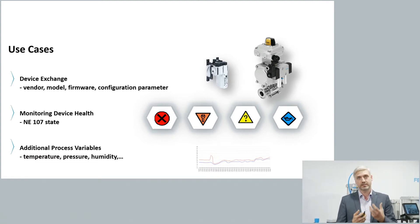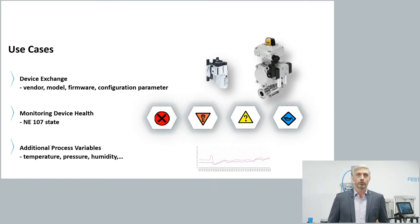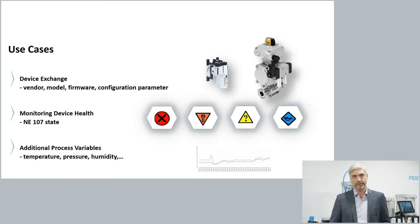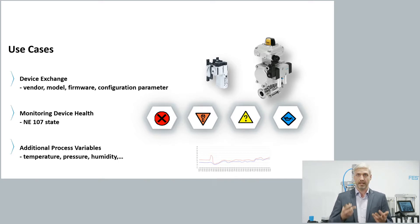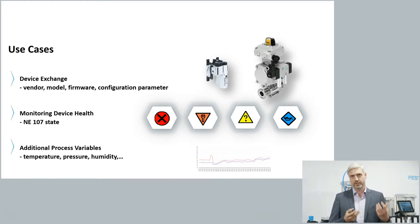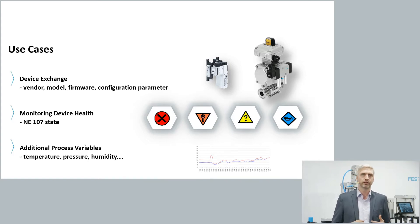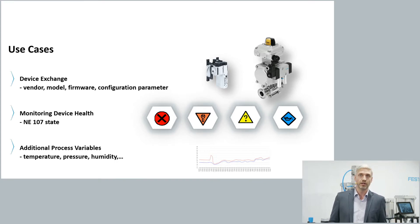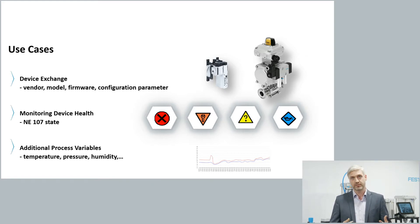For device exchange, all the information needed to swap a device — including configuration parameters, vendor type, firmware version, software revision, and so on — is part of the NOA information model. This ensures 100% correct device configuration, and you can pre-configure the replacement before the exchange. The second use case is device health: always having a clear picture of the status of all devices in your plant, following the NE 107 NAMUR recommendation for displaying asset health — whether the asset is in good shape, needs maintenance, is in manual mode, and so forth.